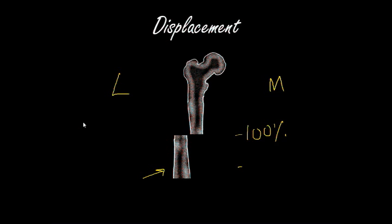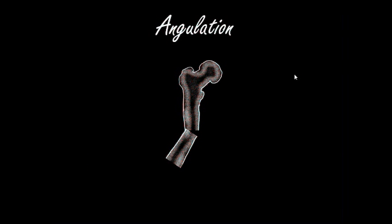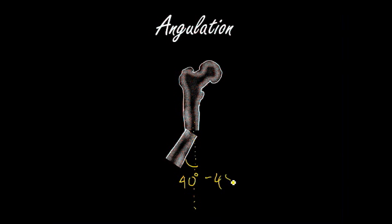Regardless of whatever fracture it is, displacement is always described relative to the distal fragment — that's an important point to stress. It may also be that the fracture is angulating. The same principle applies: describe which direction the angulation is taking place — medial, lateral, posterior, anterior, dorsal, or volar, depending on which bone it is. It's always worth describing how much angulation is taking place; for example, approximately 40 to 45 degrees of angulation in this case.